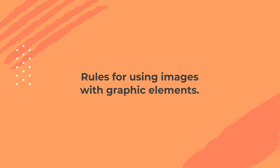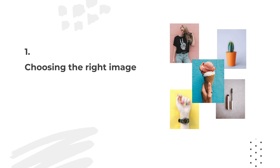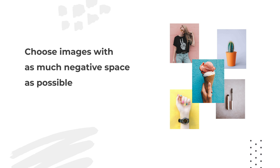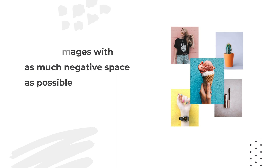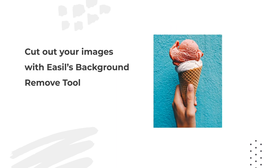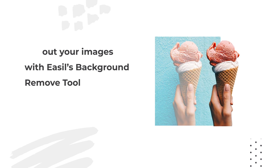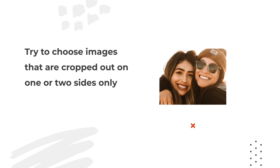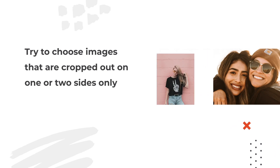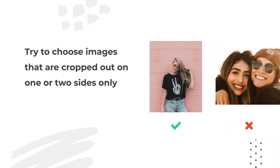Here are a few rules I always like to stick to. First of all, it's really important to choose the right images that will work in harmony with your graphic elements. You want to choose images with as much negative space as possible. Images on simple backgrounds like these are perfect. Even if the image is cropped a bit tighter, as long as it's on a simple background, we can use Easel's background remove tool to cut it out perfectly. Try to choose images that are cropped out on one or two sides only — this gives you way more freedom for placement of elements and text on your design.